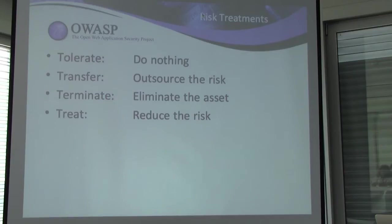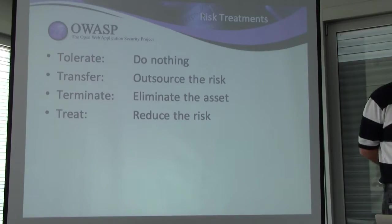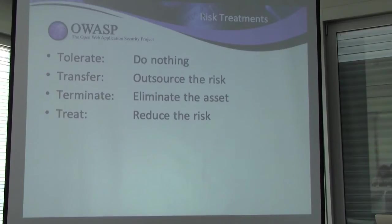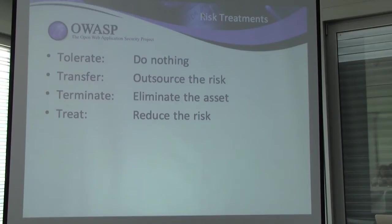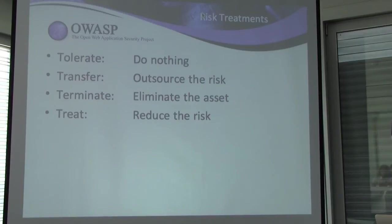There is an increasing but perhaps immature market in what might be called cyber risk insurance, though there are lots of different names given to it. A better treatment is potentially to get rid of the asset completely, and obviously that's not always possible, but there are some intermediate measures — for example, not collecting data you don't need and therefore don't need to protect, and also disposing of data sooner through data retention and disposal processes. Losing a million credit cards might be bad, but losing 10 million is even worse, so minimizing data is definitely a way to reduce risk.